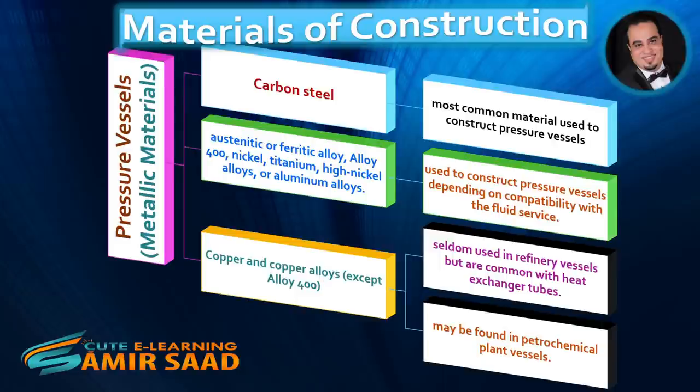Third, copper and copper alloys, except Alloy 400, are seldom used in refinery vessels but are common with heat exchanger tubes, and may be found in petrochemical plant vessels.